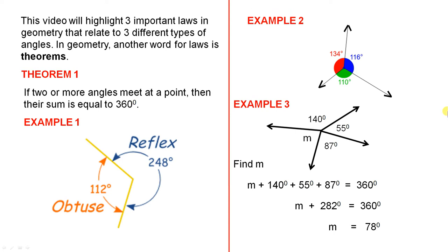So let's look at theorem 1. If two or more angles meet at a point, then their sum is equal to 360 degrees. That's the theorem, and here's the first example. A very simple one, because there's the point, and we have two angles at this point.